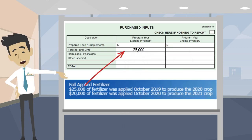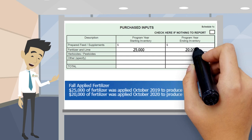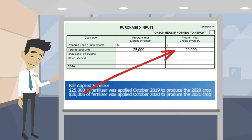The $25,000 of fertilizer that was applied in October of 2019 to produce the 2020 crop goes under the column program year starting inventory. And the $20,000 of fall-applied fertilizer in October of 2020 that was used to produce the 2021 crop goes under the column program year ending inventory.